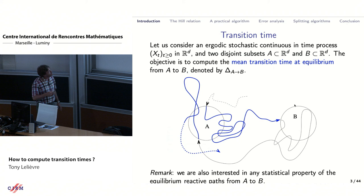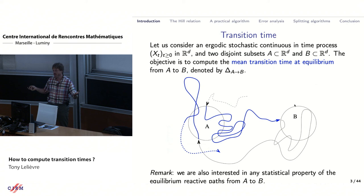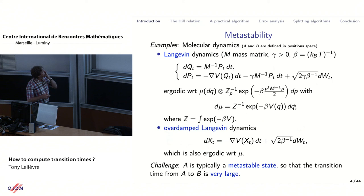Since the process does this many, many times, you can do averages over these paths. This is what I call equilibrium — you will see many of these blue paths and do averages over them. Typically the focus of this talk will be the time it takes to go from A to B, the length of these blue paths. But you can imagine all the things you would be interested in.